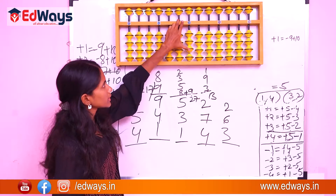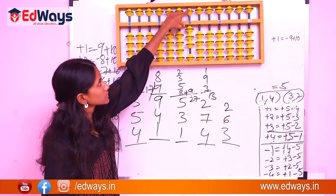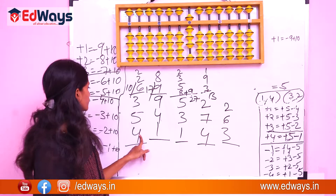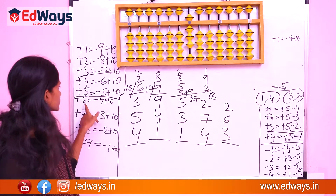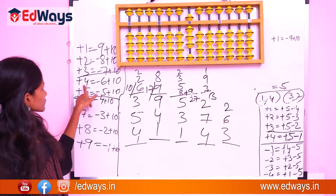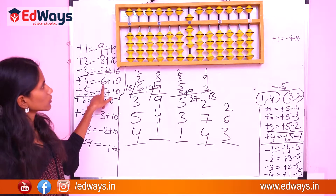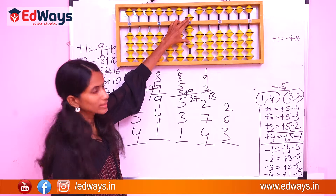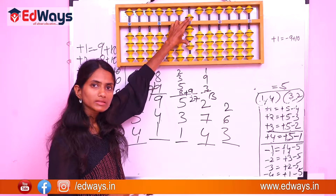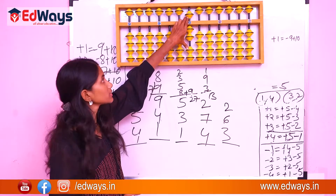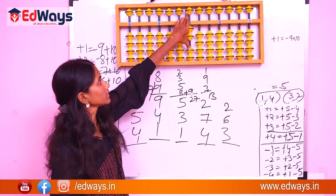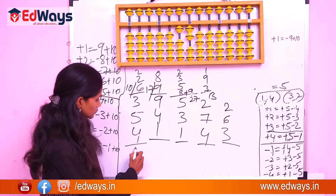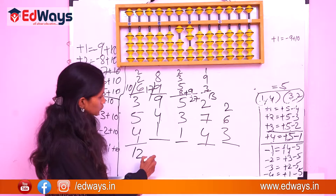Example: 3 plus 5 plus 4. For plus 4: 4's complement is 6, so minus 6 plus 10 — we subtract the complement and add 10. The answer is 12.